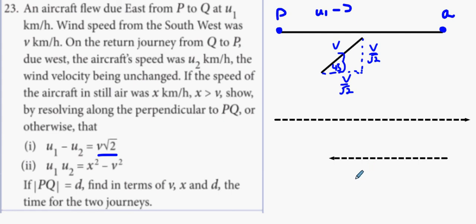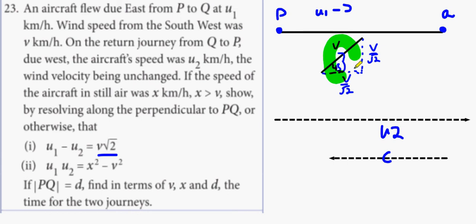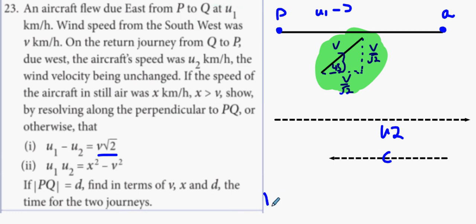If the aircraft's speed was U2, the wind's velocity being unchanged. If the speed of the aircraft in still air was x, show that by resolving along the perpendicular to PQ, or otherwise, that U1 minus U2 is V root 2. Alright, happy days.